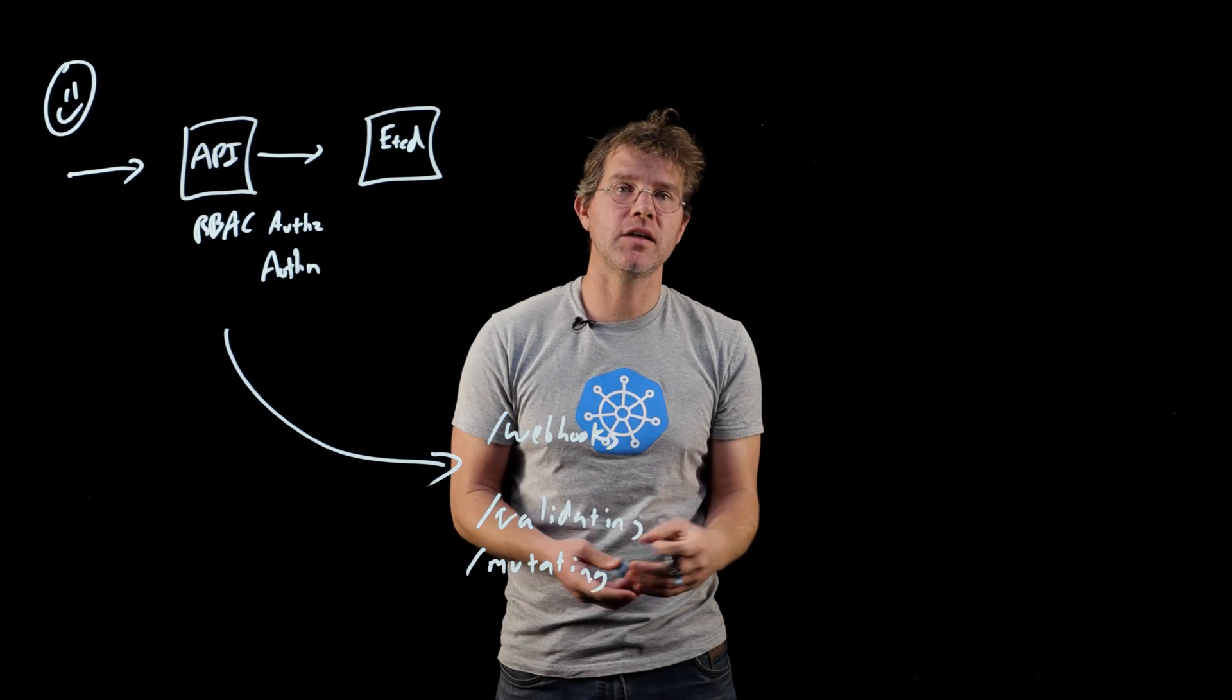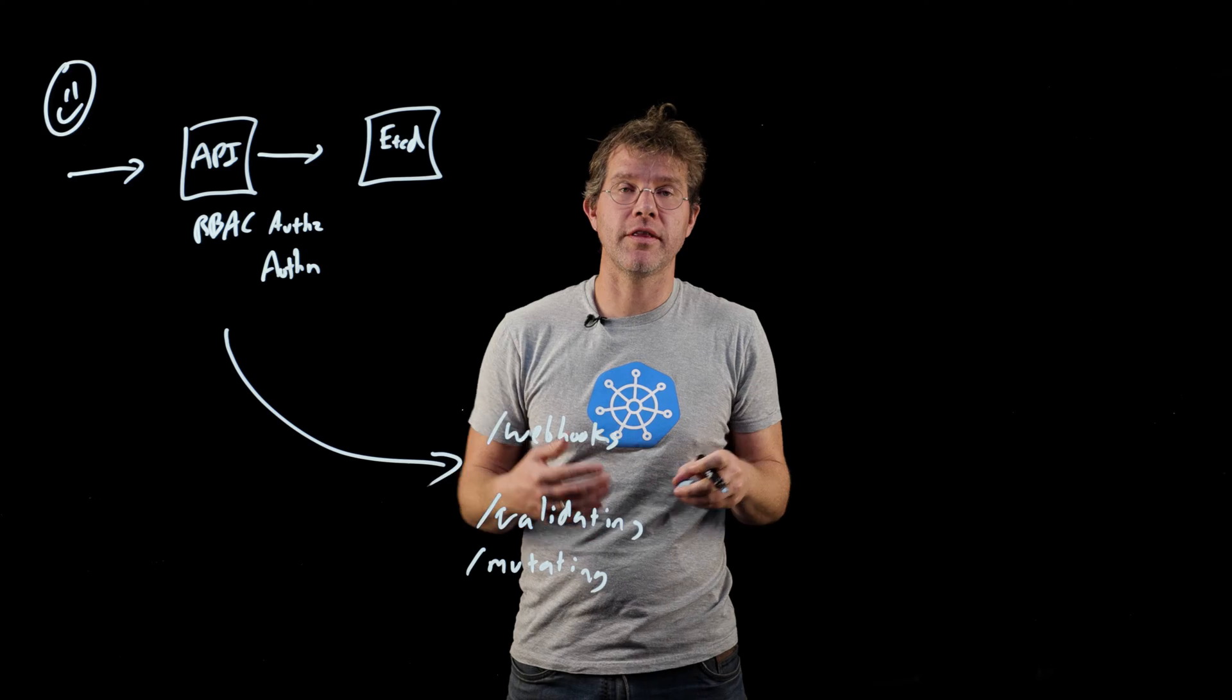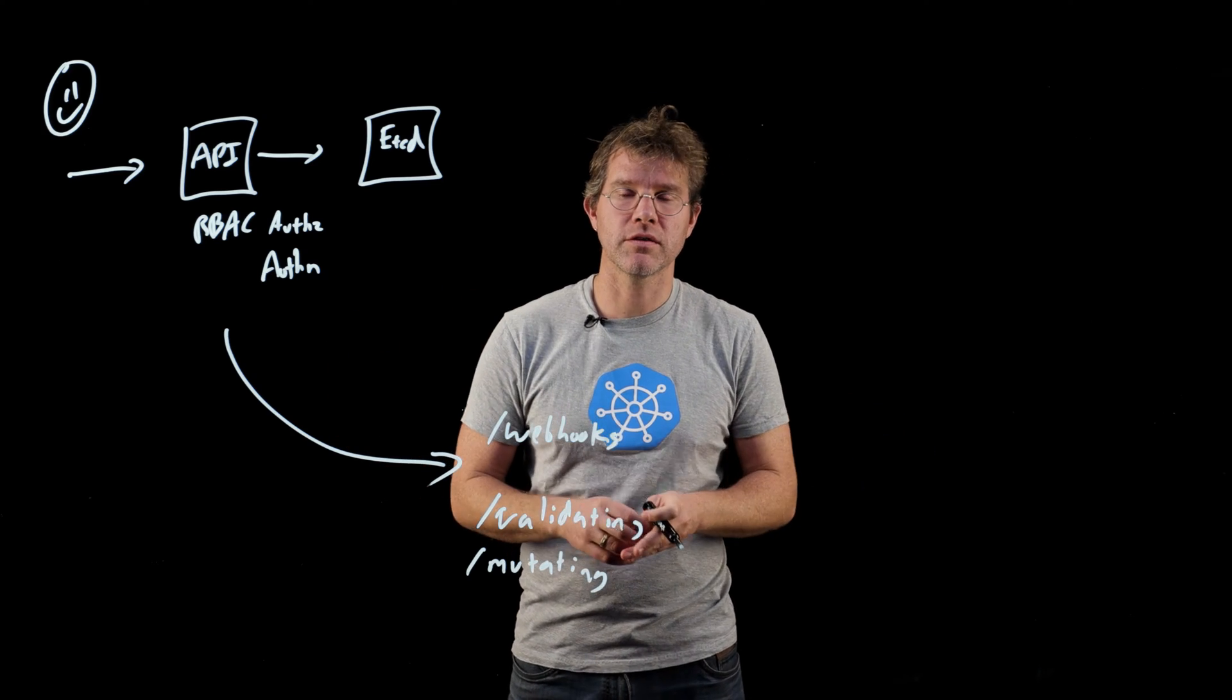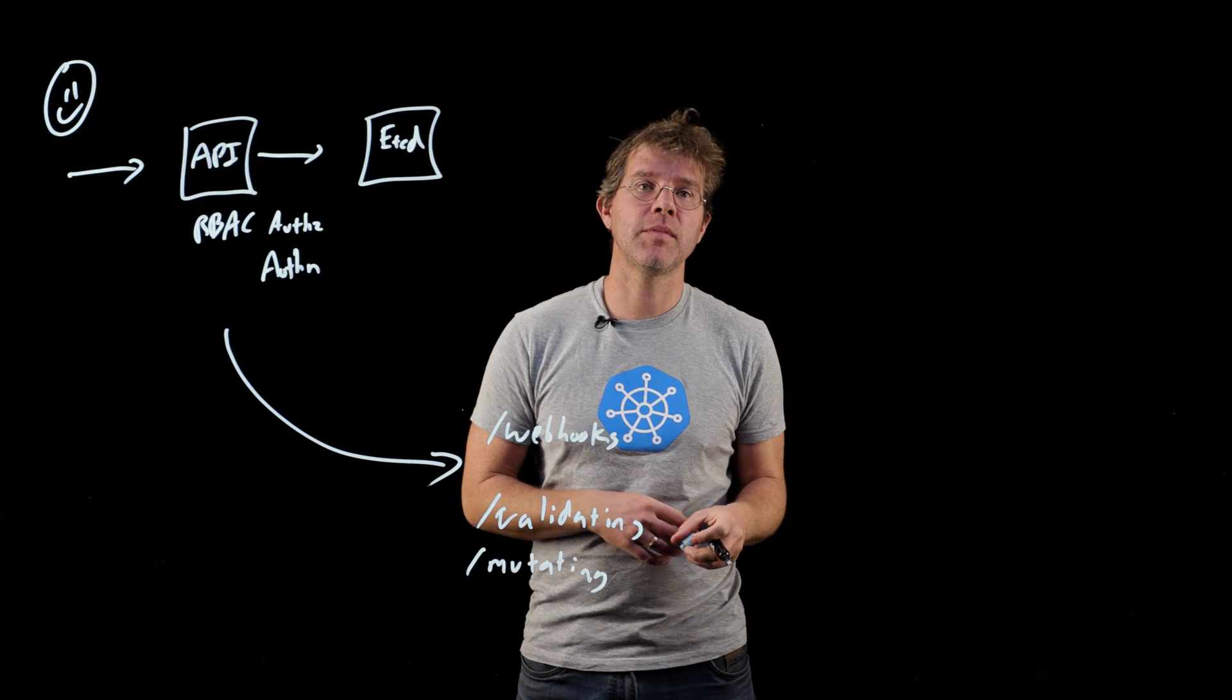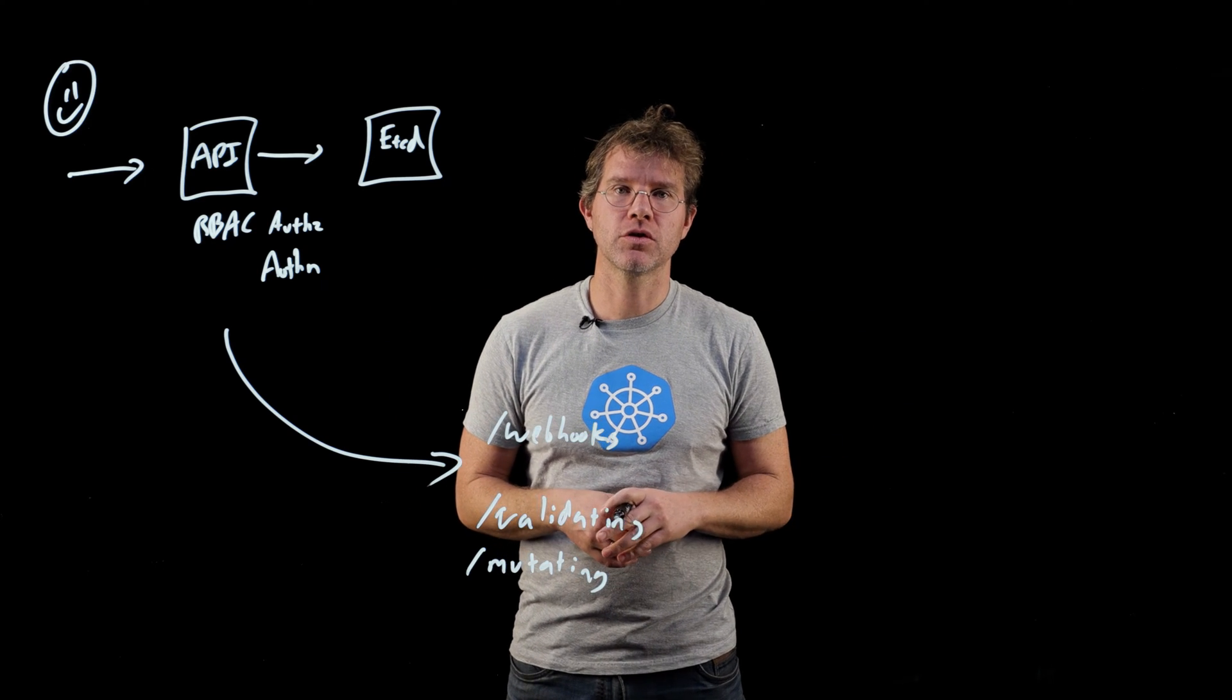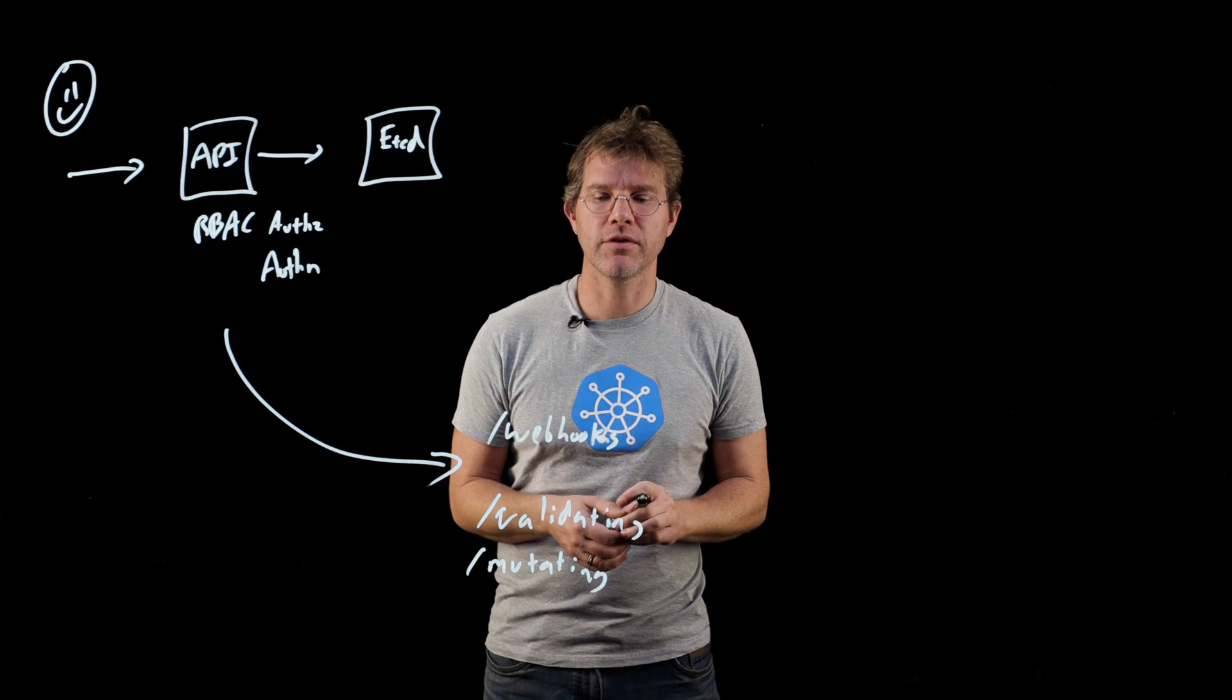As you might guess from the name, a validating admission controller looks at the contents of an API object and makes sure that it's a valid API object. And we'll talk a little bit about some use cases for that. A mutating admission controller looks at an API object and actually changes it. So it actually may add things, it may remove things. It actually modifies the API object on the way in. And we'll talk about the use cases for that as well.